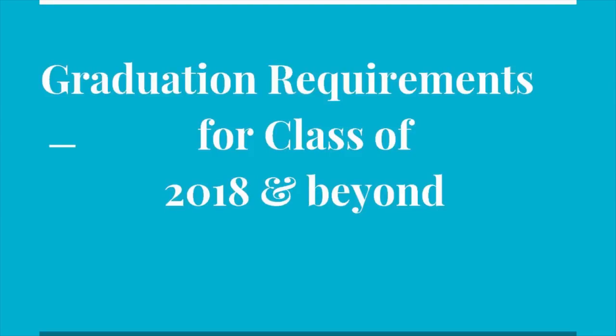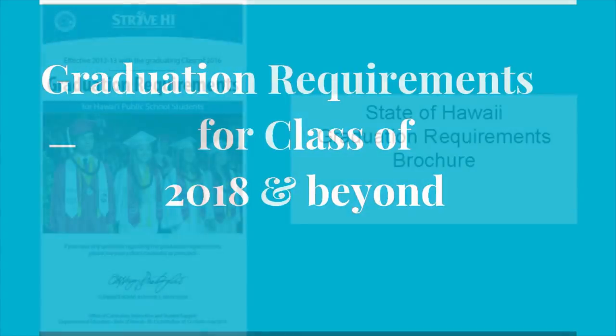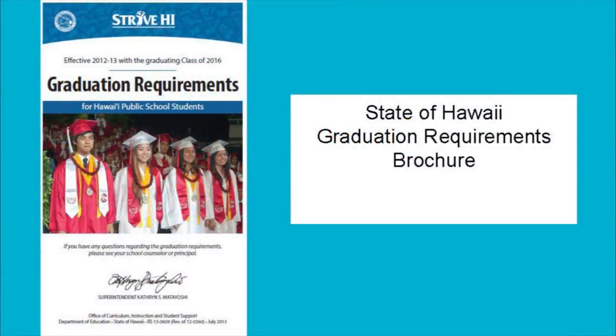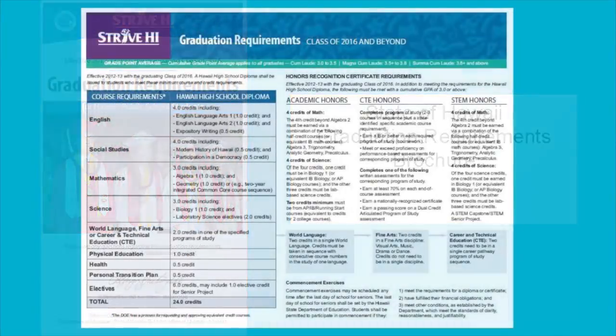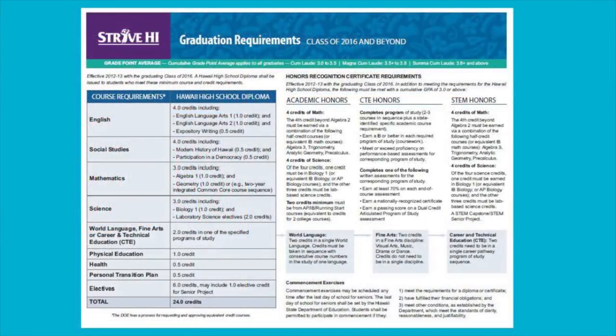In preparation for selecting your courses for next school year, we need to review the graduation requirements for all classes beginning with the class of 2018 and beyond. Teachers, please distribute the graduation requirements handout. The graduation requirement handout is a Xerox copy of the inside of the actual graduation requirements brochure. Please refer to the table on the left that outlines the various requirements for graduation. To the right of the table is an explanation of the various certificates a student is able to obtain beyond the basic high school diploma. We will now go over all different parts separately.